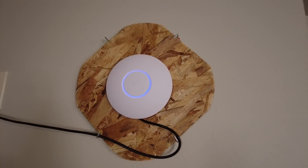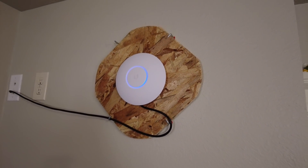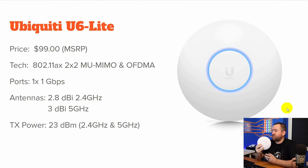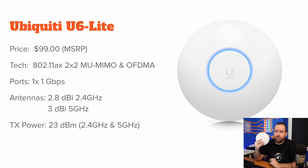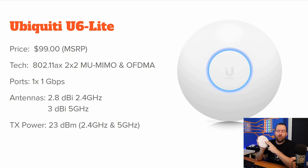The U6 Lite features 802.11ax 2x2 multi-user MIMO and OFDMA — that's orthogonal frequency division multiple access. It features one gigabit port in the back, and it has a 2.8 dBi antenna in the 2.4 GHz range and a 3 dBi antenna in the 5 GHz range. The transmit power of this device is 23 dBm in both 2.4 and 5 GHz.